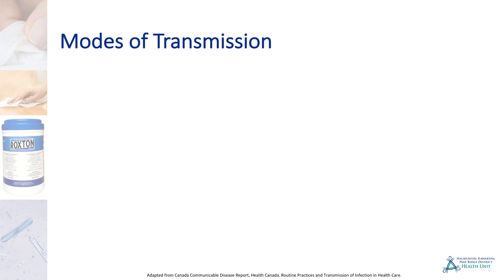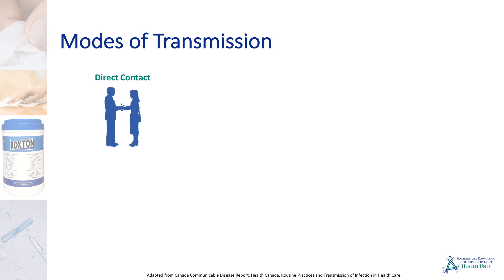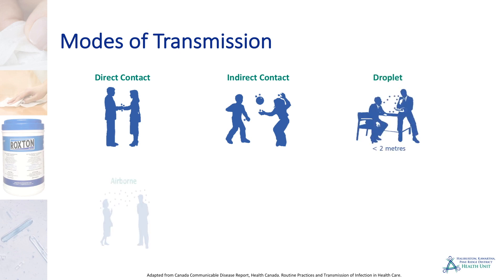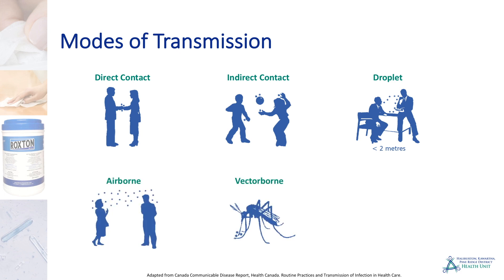An infectious agent moves from person to person in different ways: direct contact with someone who's sick, indirect contact when someone touches an infected object, droplet if someone sneezes close to your face, airborne by the small droplets that stay in the air, vector-borne carried by an insect like a mosquito, or through a vehicle like contaminated food or water.